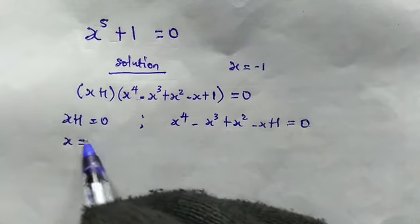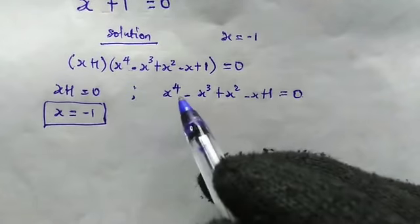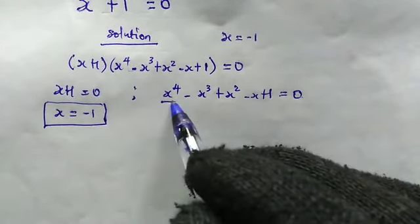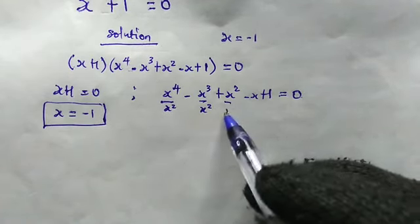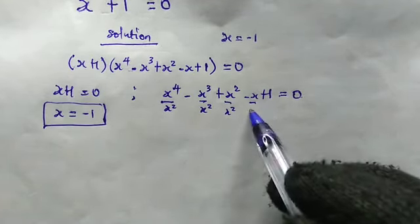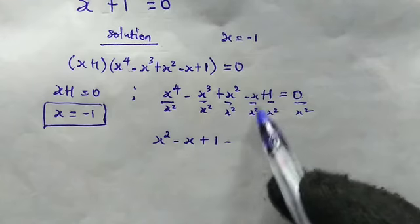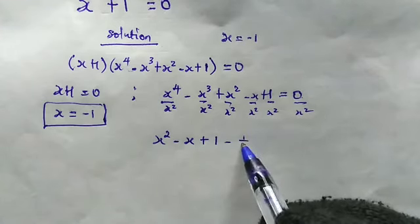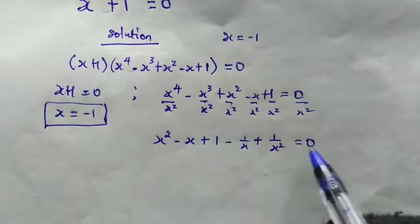From the first factor we have the solution x is equal to negative 1. Now for the quartic, let's divide both sides by x squared. So x to the power of 4 divided by x squared gives x squared, minus x, plus 1, minus 1 over x, plus 1 over x squared, and this is equal to 0.